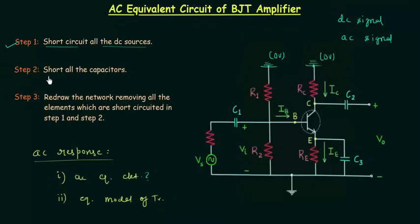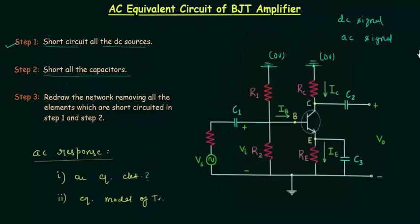In step number two we need to short all the capacitors. We have three capacitors: C1, C2, and C3. C1 and C2 are called coupling capacitors and C3 is called the bypass capacitor. Why we are short circuiting the capacitors has already been explained in the last lecture.